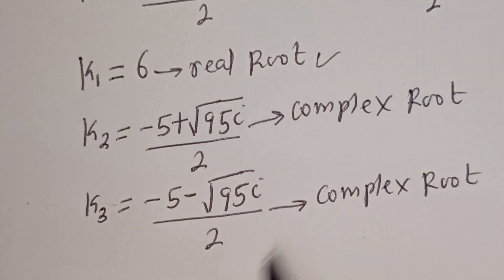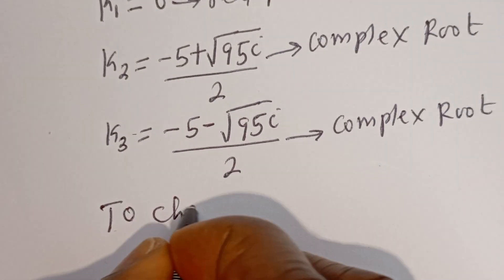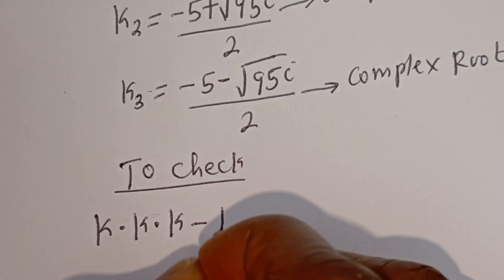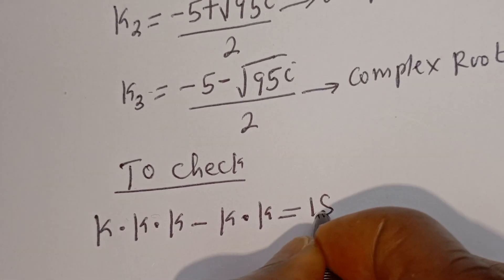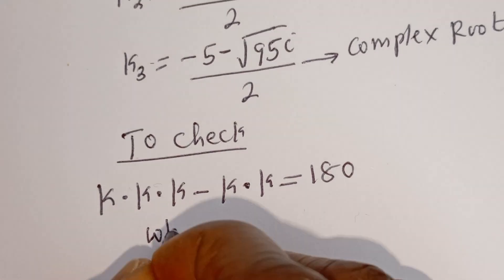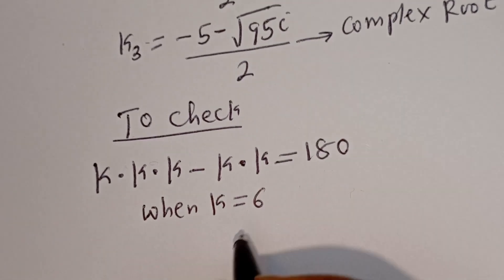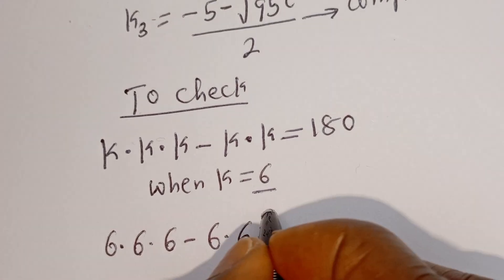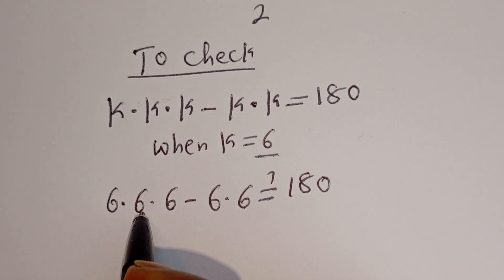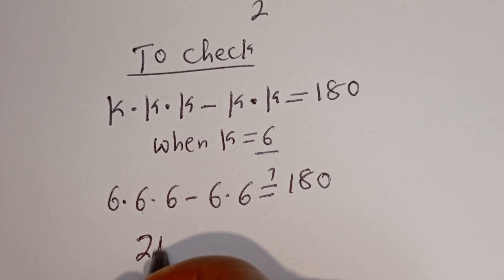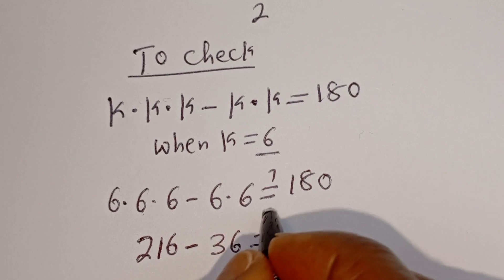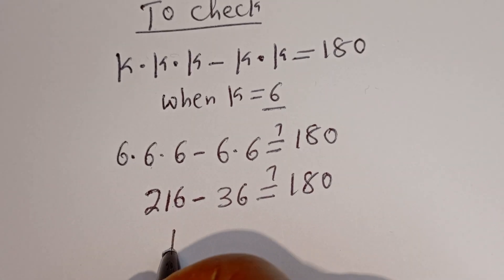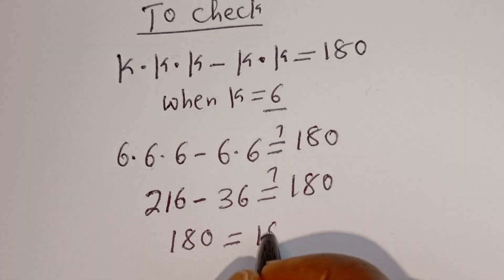We can check to confirm if this answer is right or wrong. Let's check using the real root, which is k equals 6. We have the given equation: K multiplied by K multiplied by K minus K multiplied by K is equal to 180. When K is equal to 6, we have 6 multiplied by 6 multiplied by 6 minus 6 multiplied by 6 must equal 180. 6 times 6 is 36, and 6 times 36 is 216. Minus 6 times 6, which is 36, must equal 180. Then 216 minus 36 equals 180, which is true.